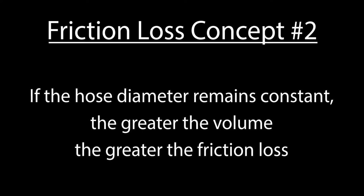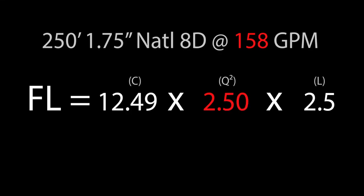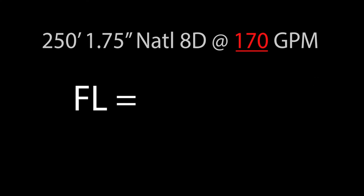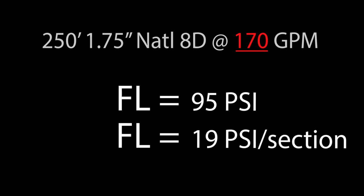The second friction loss concept states that if the hose diameter stays constant, increasing volume increases friction loss. If we increase our volume to 170 GPM, our total friction loss will increase to 95 PSI, or 19 PSI per section.